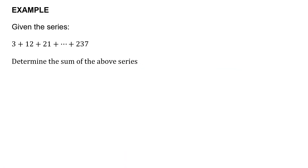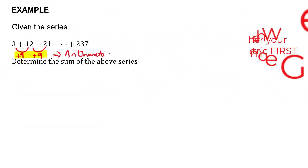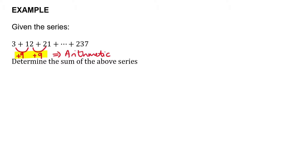In the second example, we're given the series 3 + 12 + 21 + ... + 237. Step one is always to identify the kind of series. Checking the difference: 12 minus 3 is 9, and 21 minus 12 is also 9 — a constant difference — so this is an arithmetic series. The question doesn't tell us how many terms we're adding, so we have to figure that out ourselves.